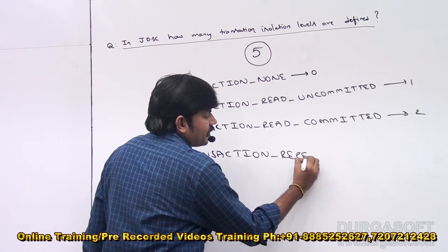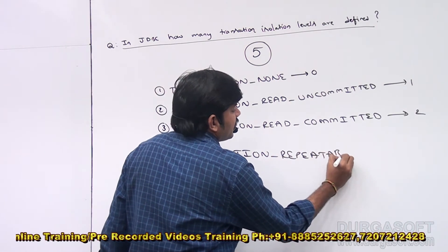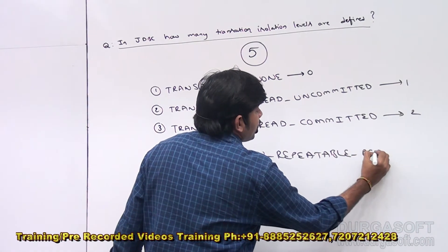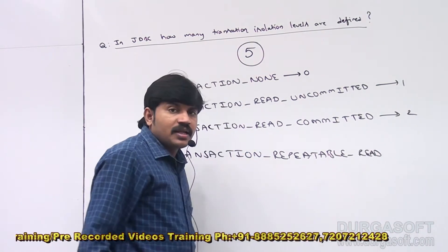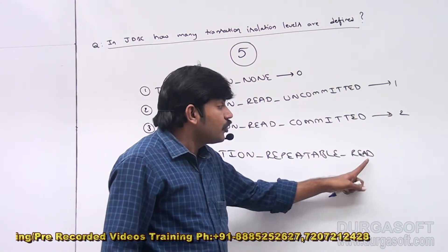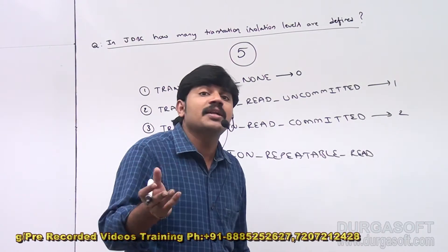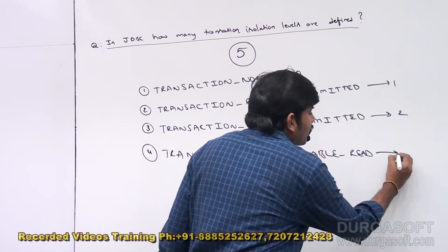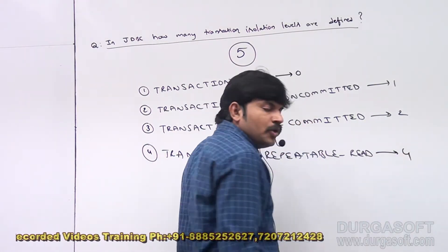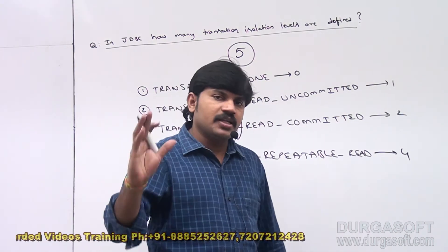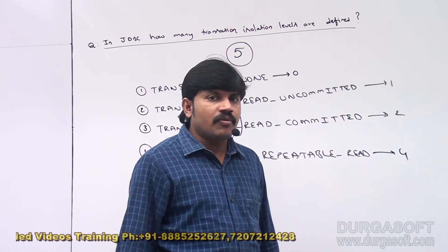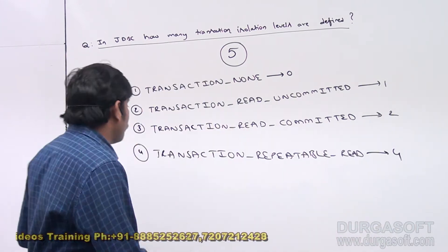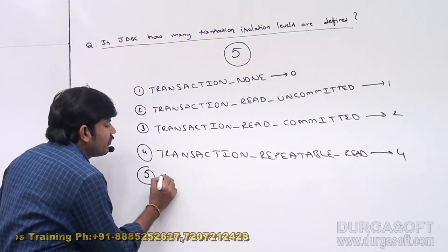The fourth one is TRANSACTION_REPEATABLE_READ. Because of its internal locking mechanism, two problems by default will be solved: the dirty read problem will be solved, and the non-repeatable read problem will also be solved.